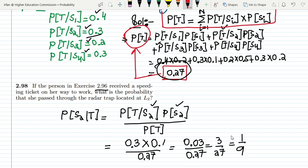So this is the solution of question 2.98 which I wanted to find out. This is the probability of trapping at location L2 if the vehicle has received a speeding ticket.